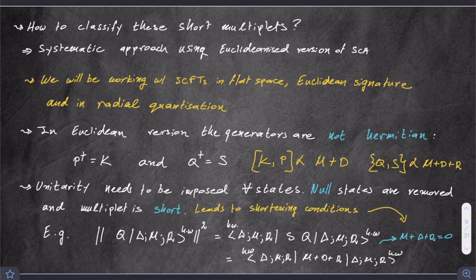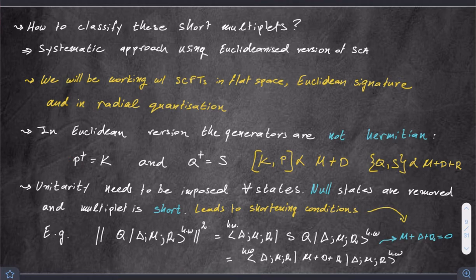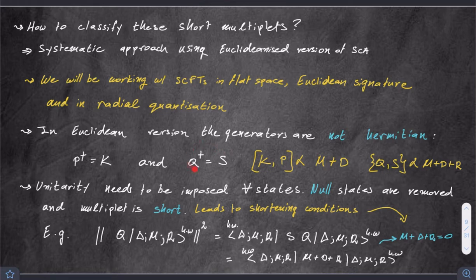In the Euclidean version of this superconformal algebra, you can come up with a basis of generators which is not Hermitian — instead of P-dagger being P or minus P, it goes to K; likewise, Q-dagger can be identified with S. Very roughly speaking, P's and K's participate in commutation relations involving the Lorentz generators and the dilatation generator. Q and S, or Q and Q-dagger, involves M, D, and R in different combinations depending on the space-time dimension and amount of supersymmetry.